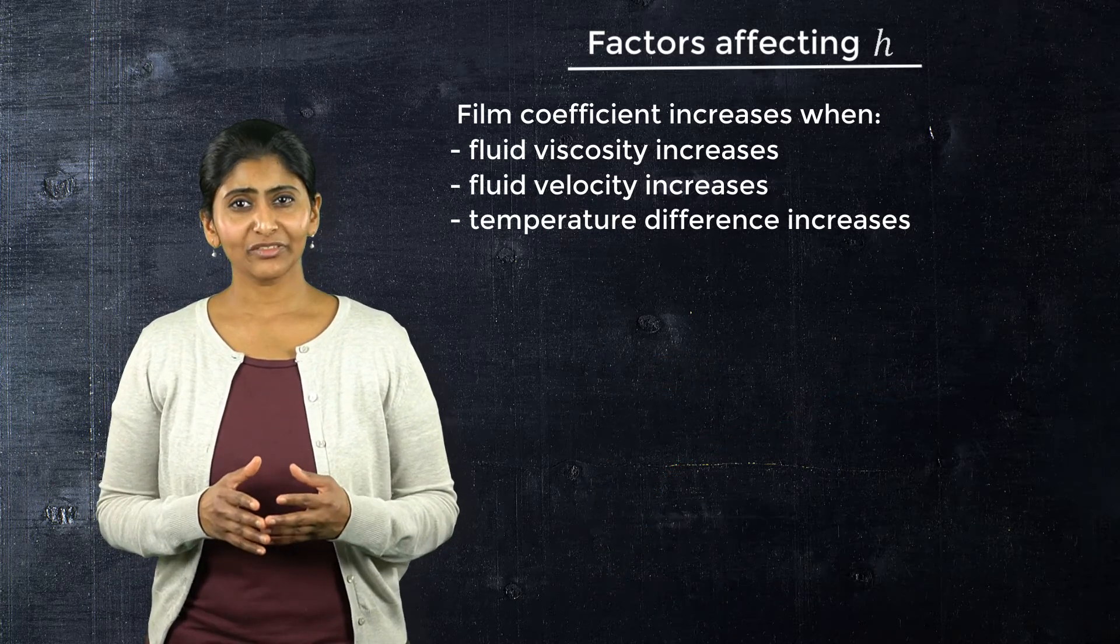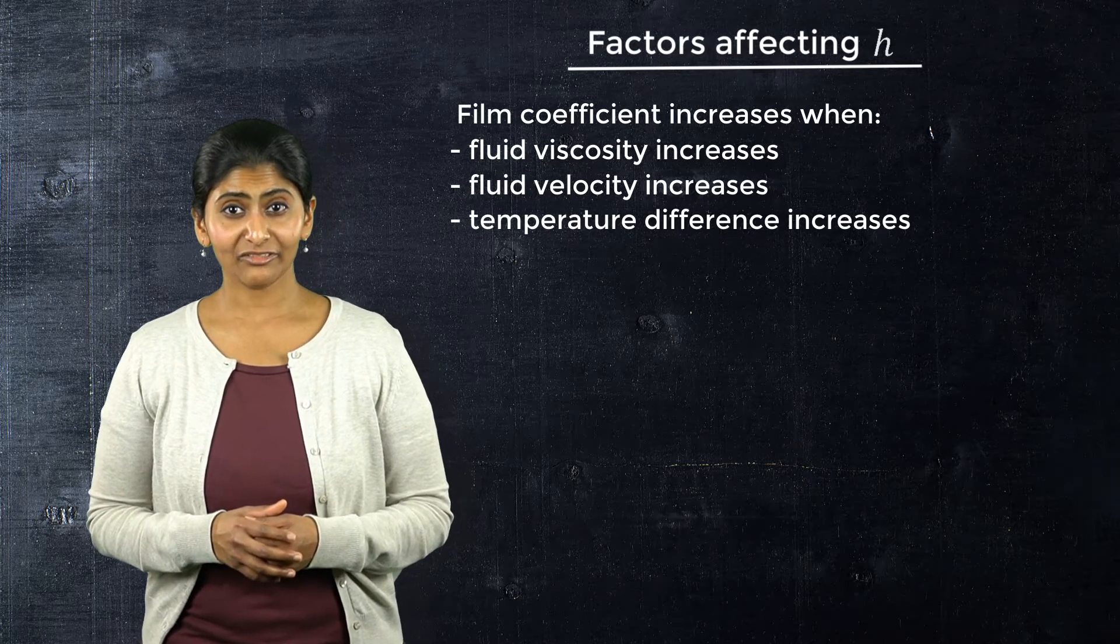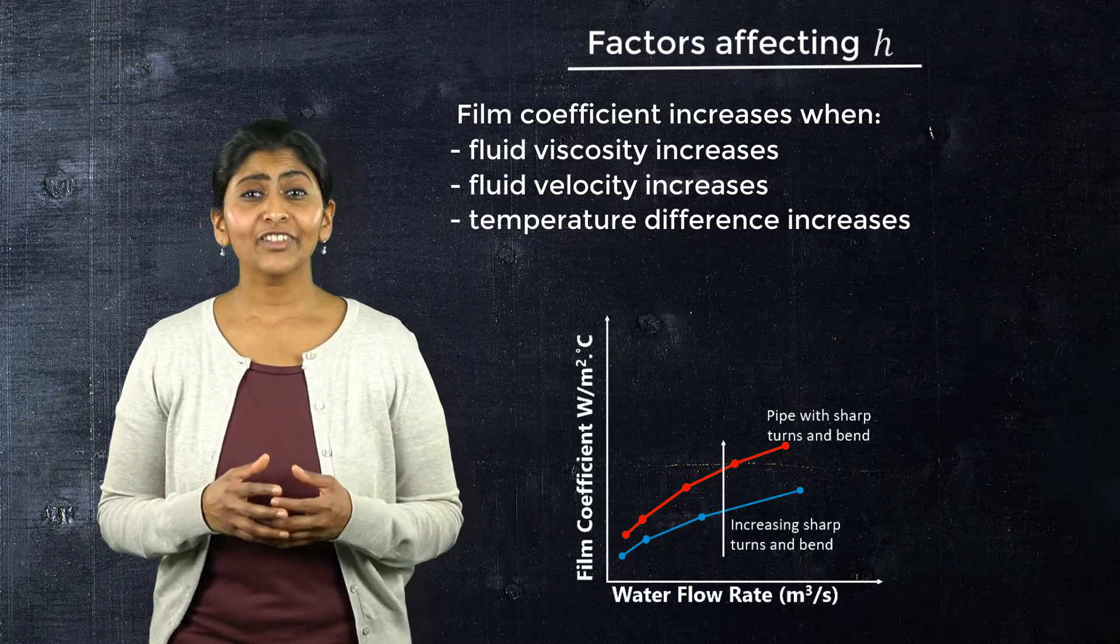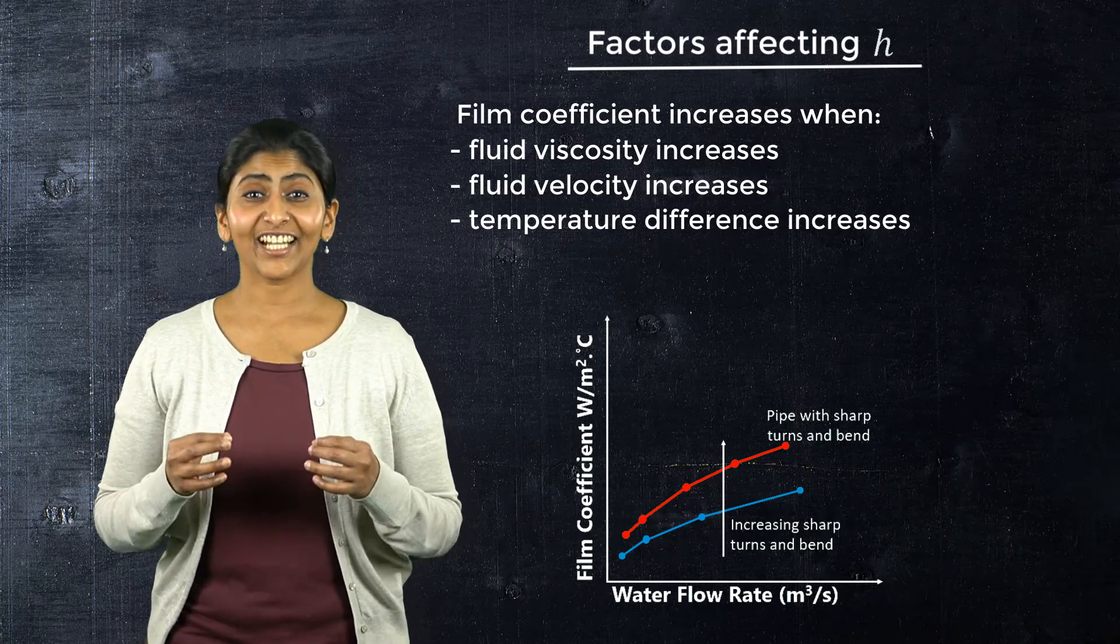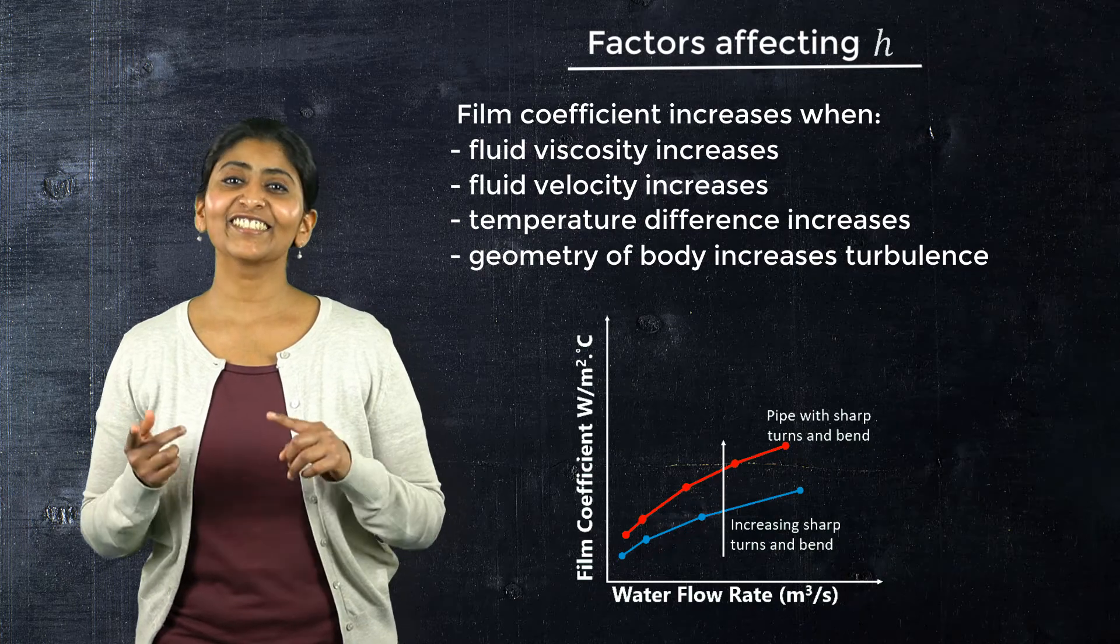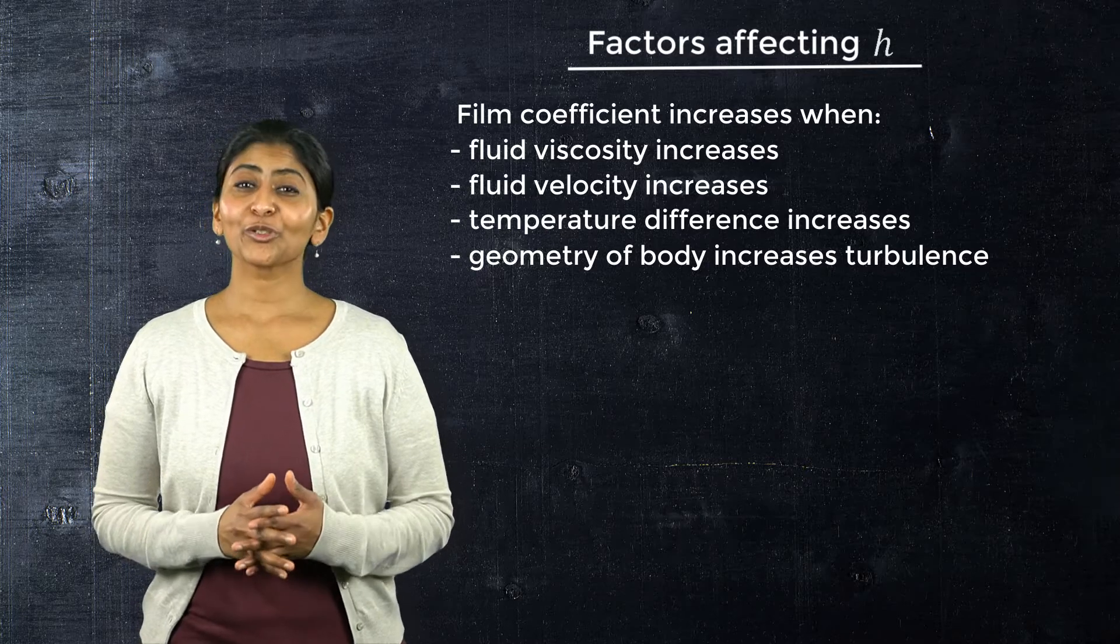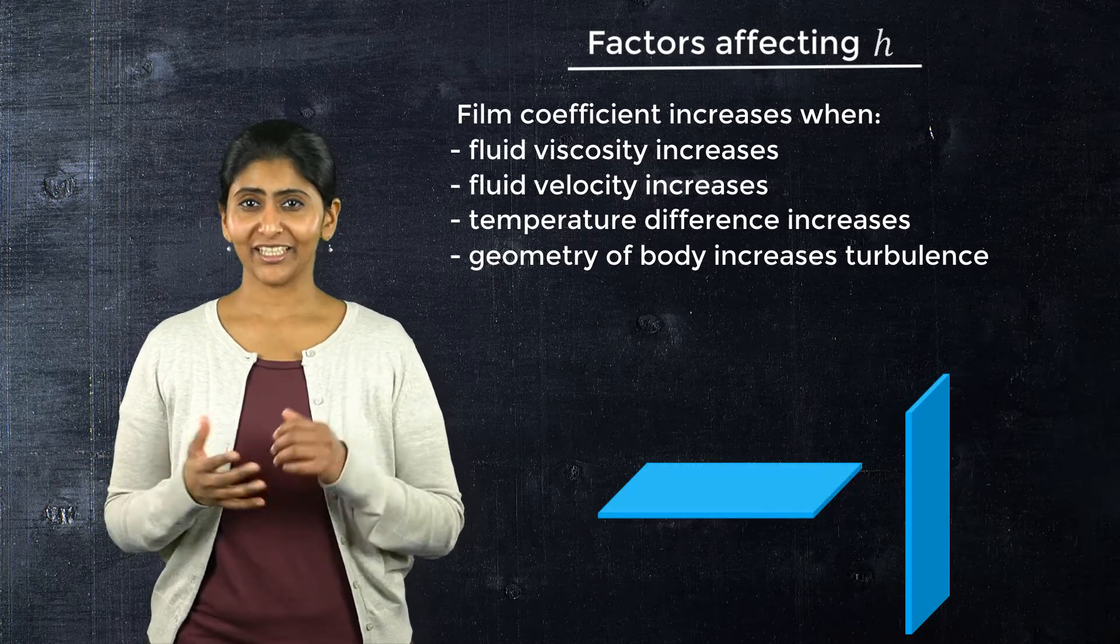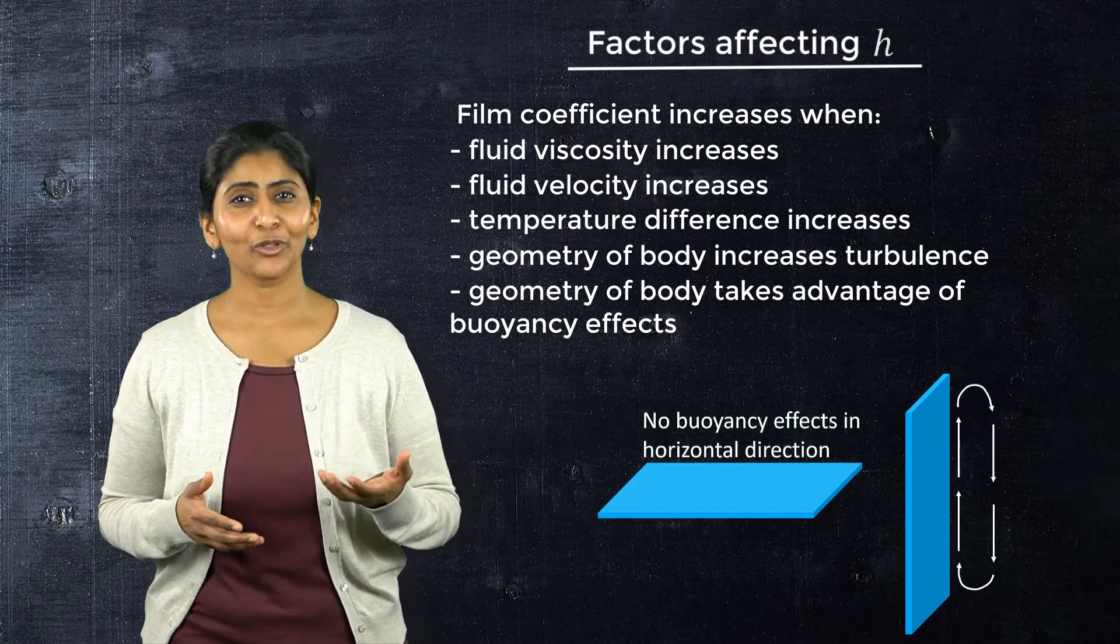Also, geometry of the surface or the body impacts the film coefficient. In the graph here, we see that for a pipe having more sharp turns and bends, the film coefficient is higher. The reason for this is the turbulence that occurs due to turns and bends in the pipe, which in turn increases the film coefficient. Here is another example showing the impact of geometry. Consider we have a horizontal and a vertical plate. In the vertical plate, due to buoyancy effects, we see a higher film coefficient value.